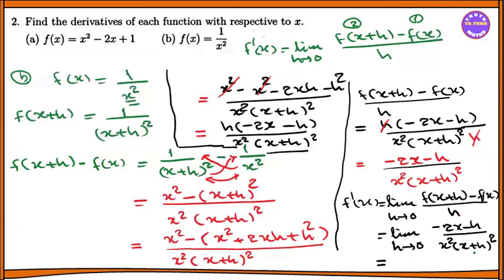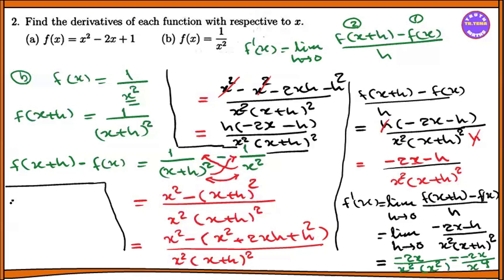Setting h equal to 0, we get minus 2x minus 0 by x squared into x plus 0, which is x squared. So here we have minus 2x by x squared times x squared, which equals minus 2x by x to the power 4.